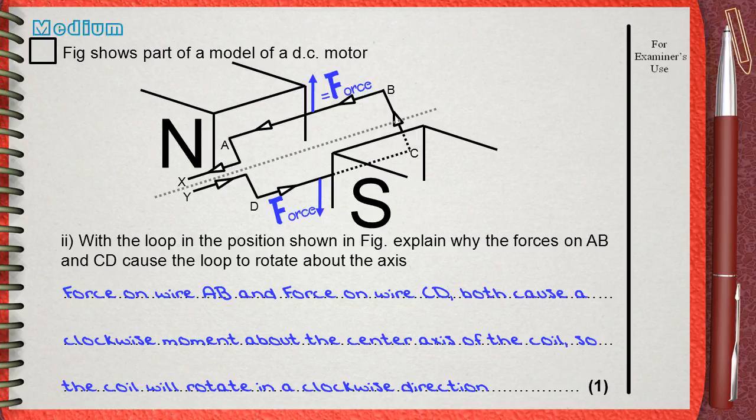If we consider the center dotted line as the axis or the pivot of the coil, force on AB is upwards, force on DC is downwards. If we relay these forces to the center of the coil, they will both cause clockwise moment, which causes the coil to rotate in a clockwise direction.